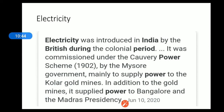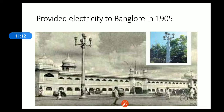In addition to the gold mines, it supplied power to Bangalore and the Madras Presidency. This Cauvery Power Scheme was introduced by the British, and it provided electricity to Bangalore in 1905.